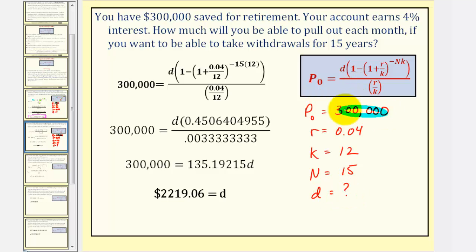We'll substitute 300,000 for P sub zero, 0.04 for R, and 12 for K, and 15 for N.